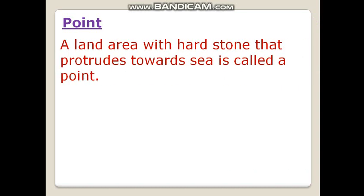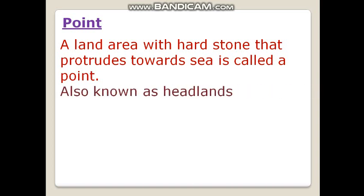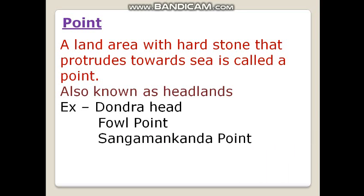Now we will discuss what we mean by a point. A point is a land area with hard stone that extends towards the sea, also known as headland. Examples: Dondra Head, Galle Point, Sangamankanda Point, and Point Pedro. In a previous session, you learned that the length of Sri Lanka is 432 km from Point Pedro to Dondra Head, and the width is 224 km from Colombo to Sangamankanda Point.